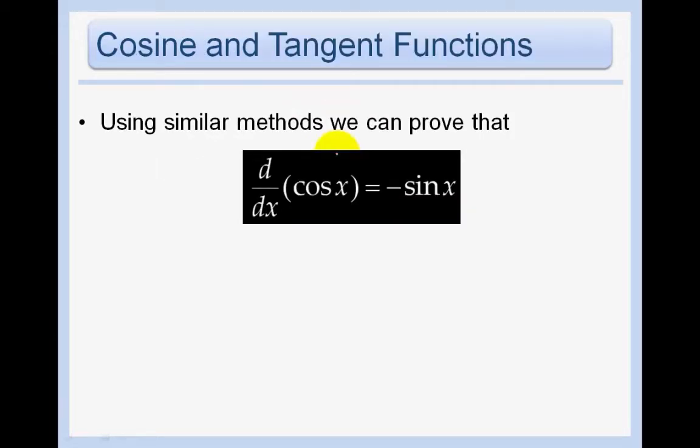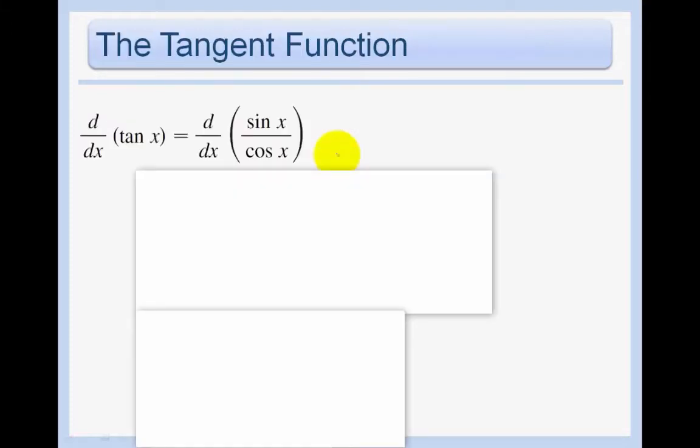Using similar methods, we can also show that the derivative of cosine is actually negative sine. For tangent, let's go ahead and do this problem because it's a good problem to do. It's just requiring us to use the quotient rule. We know that tangent is the same thing as sine over cosine. Take the derivative of the first. The derivative of sine is just cosine. Cosine times the second, which is the bottom. Minus the first times the derivative of the second. The derivative of cosine is negative sine. All over the second squared.